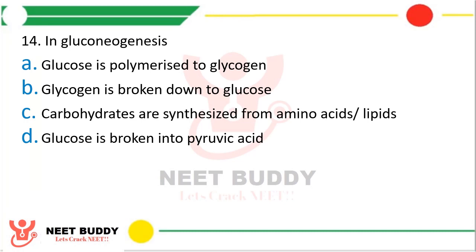Question 14. In gluconeogenesis, carbohydrates are synthesized from amino acids or lipids. Glucose is not broken into pyruvic acid in gluconeogenesis. Gluconeogenesis means: glucose (carbohydrate), neo (new), genesis (synthesis) — so glucose is being synthesized from a new source, which is amino acids and lipids.